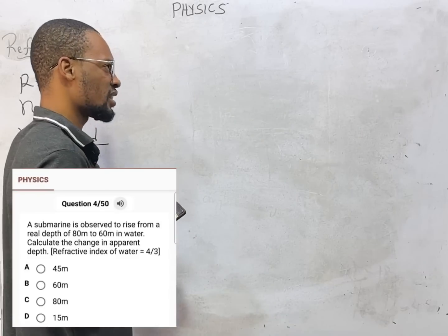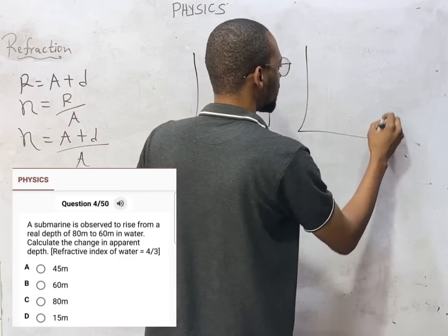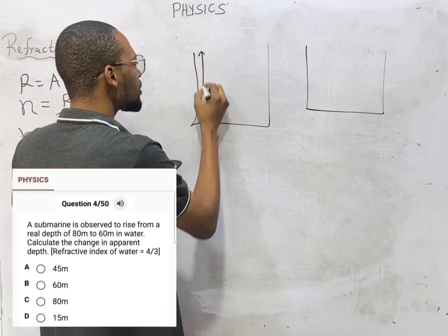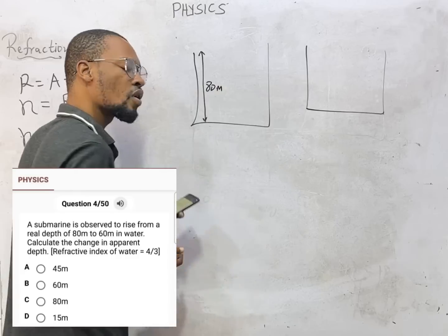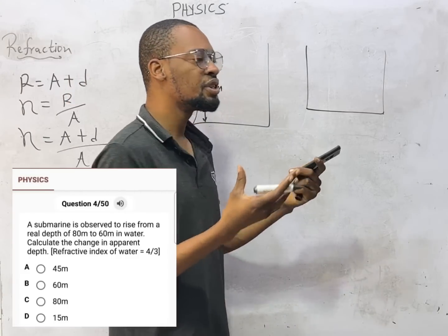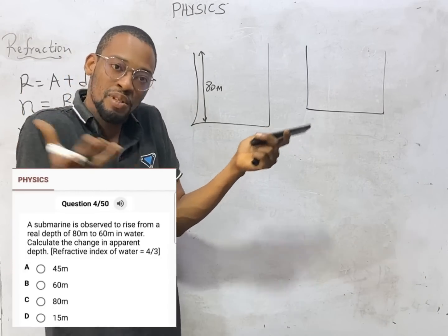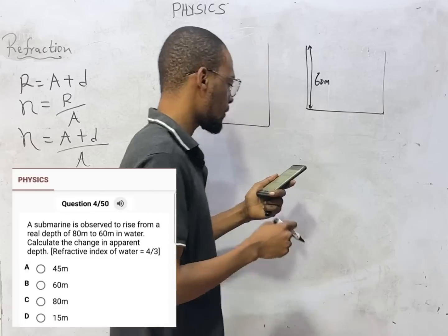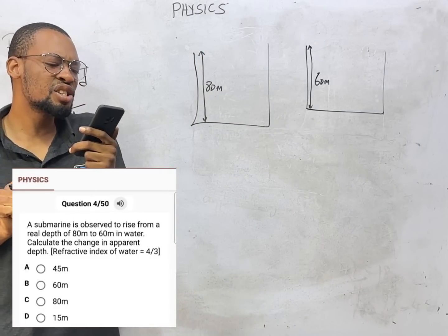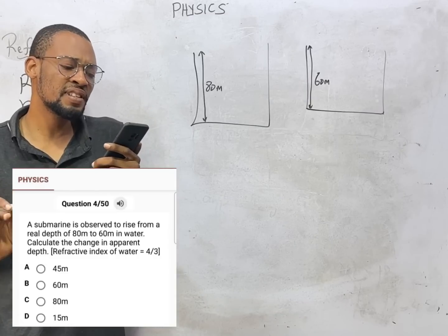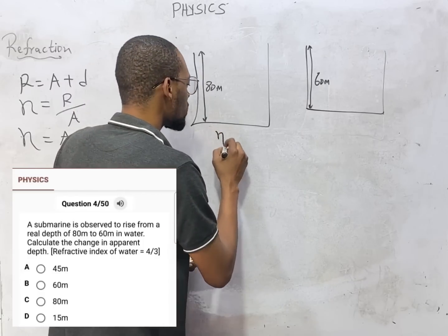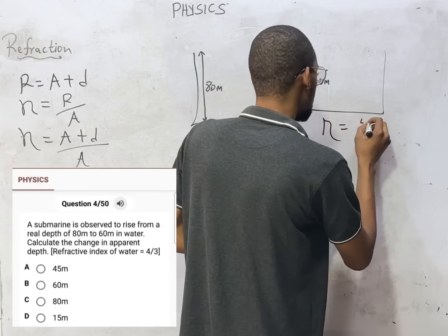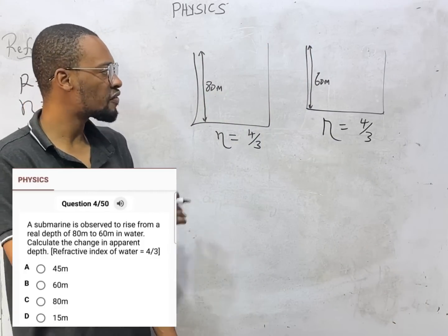Let's analyze it: for the first case, the real depth is 80 meters. For the second case, the submarine has moved up, giving us another real depth of 60 meters. We are asked to calculate the change in apparent depth, given that the refractive index of water is 4 over 3. Since both mediums are water, the refractive index will not change between cases.